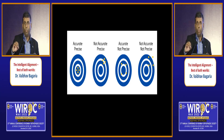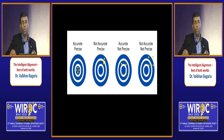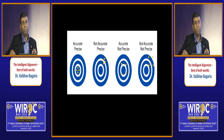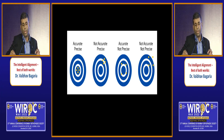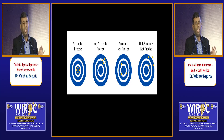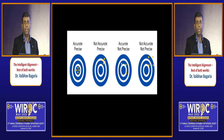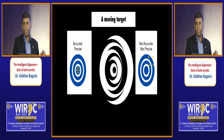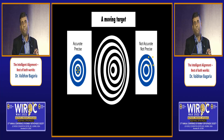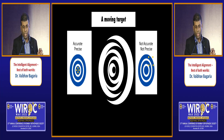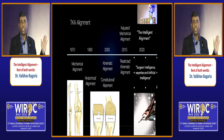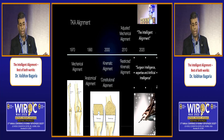This is perhaps the most important slide: we need to be accurate and precise. Some very good surgeons are precise in executing things but know where to hit the ball — they are precise but not accurate. Some know where to go but aren't precise. Some are neither accurate nor precise when starting out. And once you've achieved accuracy and precision, you're told the targets are not the same and they keep moving — that's where the intelligence lies. Technology allows us to hit these moving targets, which is why we've evolved from mechanical alignment in the 1970s through anatomical, kinematic, constitutional, adjusted mechanical, and restricted kinematic alignments.